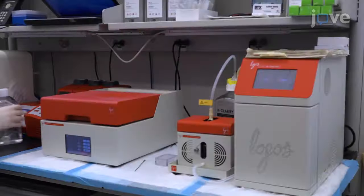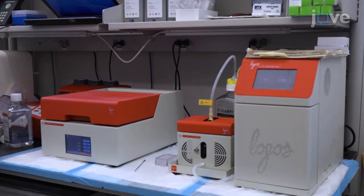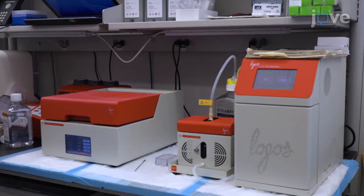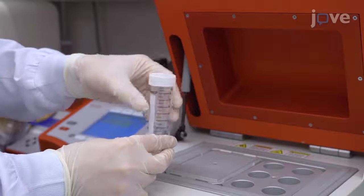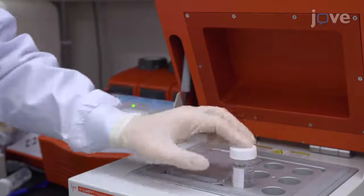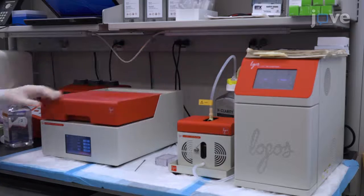To begin, place the hydrogel-submerged brain tissue in a vacuum incubator for three hours at 37 degrees Celsius with a minus 90 kilopascal vacuum. Leave the tube top unscrewed to allow the vacuum to form properly.